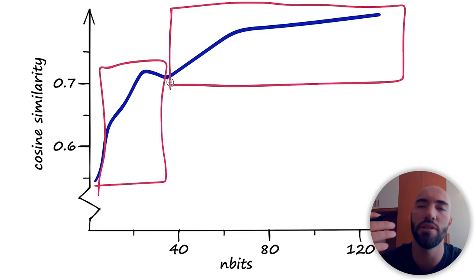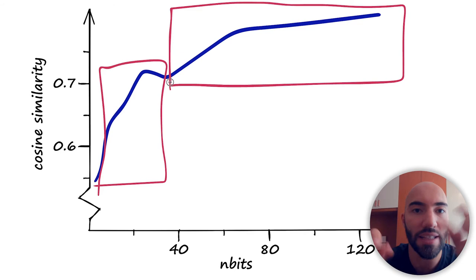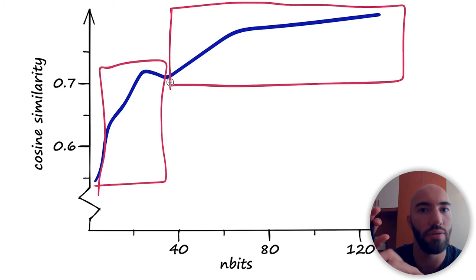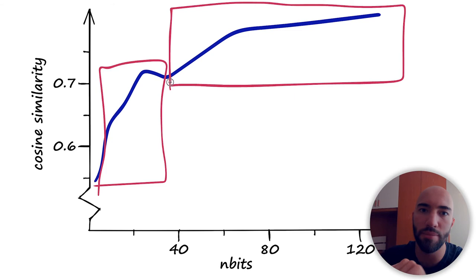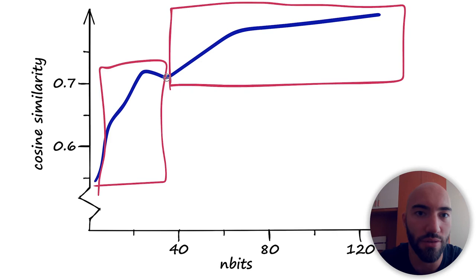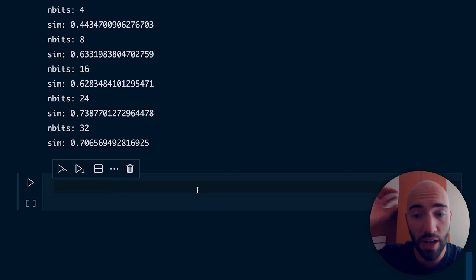That slower continuing increase happens because the buckets are now well spread, but as we increase the resolution further, we're adding more of the original positional information of those vectors — improving the resolution so they become slightly more accurate in terms of whether the hashed buckets are close to similar or dissimilar vectors. The binary vectors are more heavily representing the original dense vectors, which is why we see that slight increase continuing even after n_bits of 32.